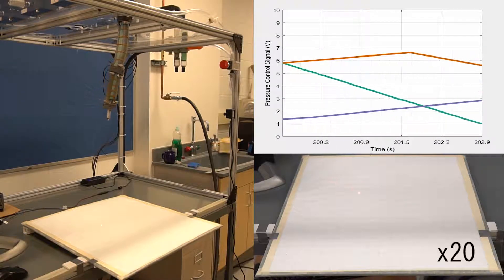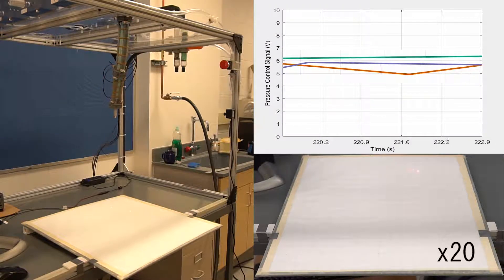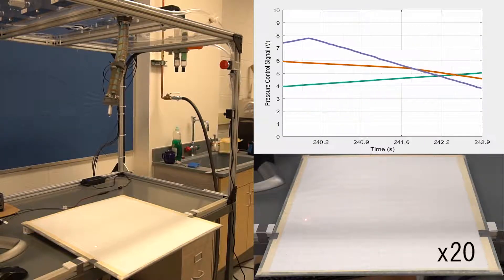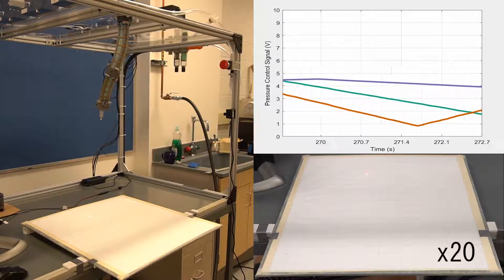We then use that data to identify a matrix approximation for the Koopman operator which provides a linear description of the dynamic behavior of the system.